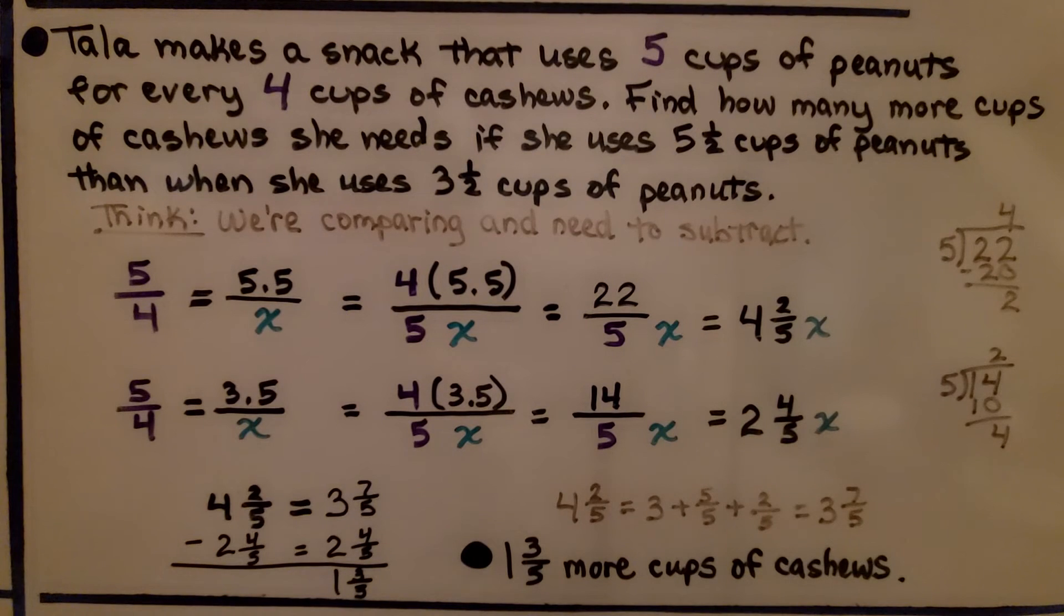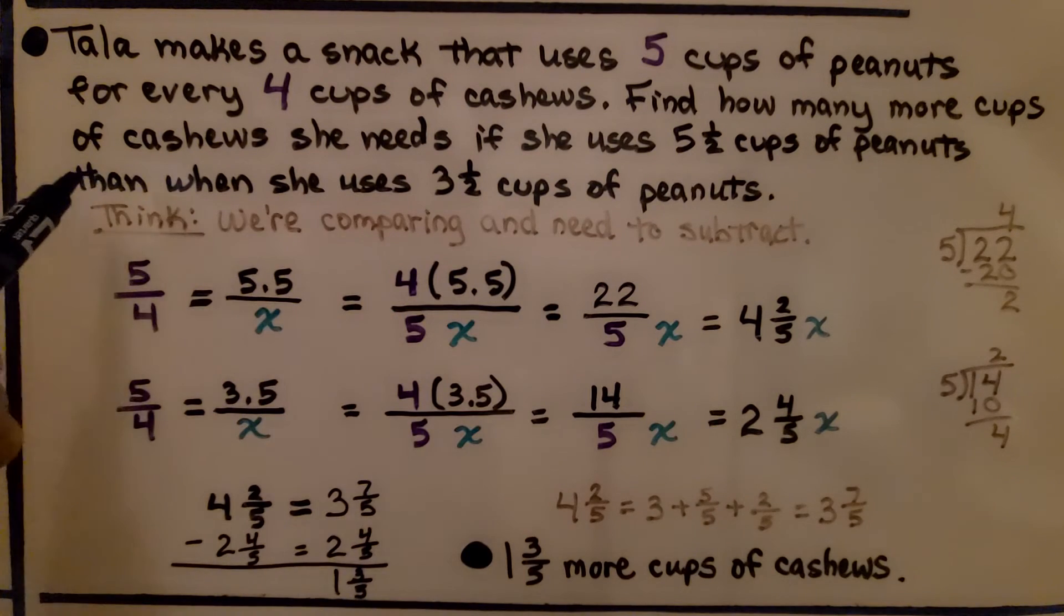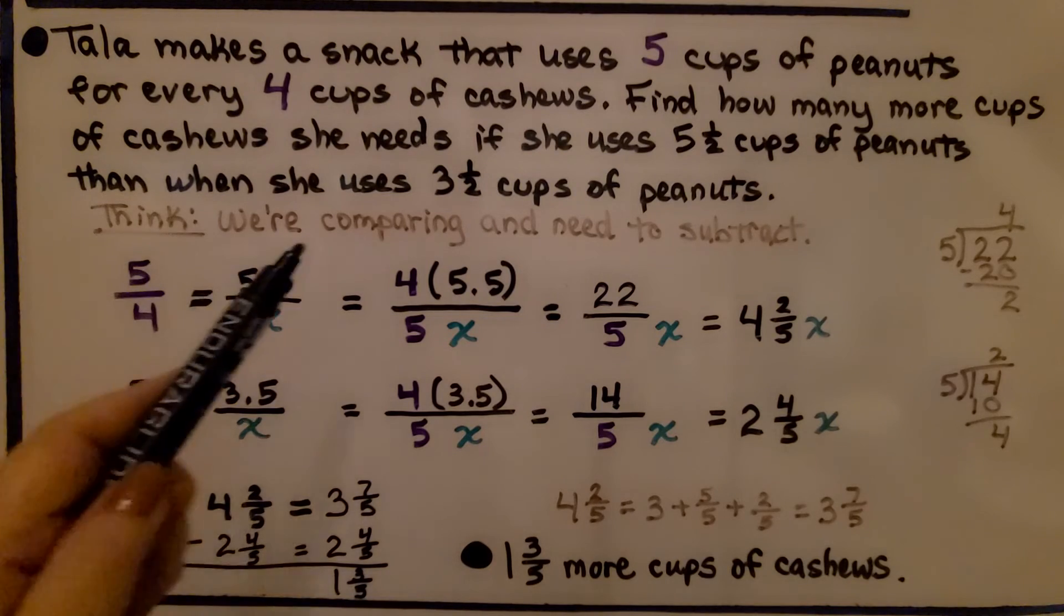Okay, are you ready for a real tricky one? Pay attention. It says Tala makes a snack that uses 5 cups of peanuts for every 4 cups of cashews. Find how many more cups of cashews she needs if she uses 5 1/2 cups of peanuts than when she uses 3 1/2 cups of peanuts. So think about what it's asking. It's asking us to compare.